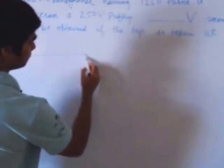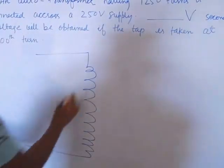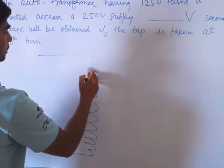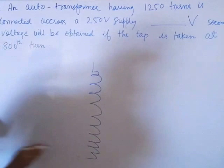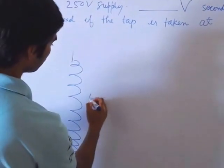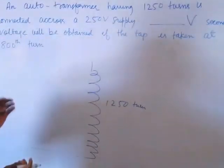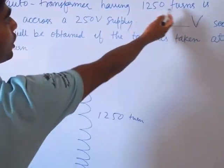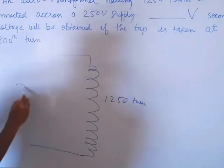How much is the total turns? 1250 total turns. The total 1250 turns with 250 volt supply - how much volt will be utilized? 250 volt.